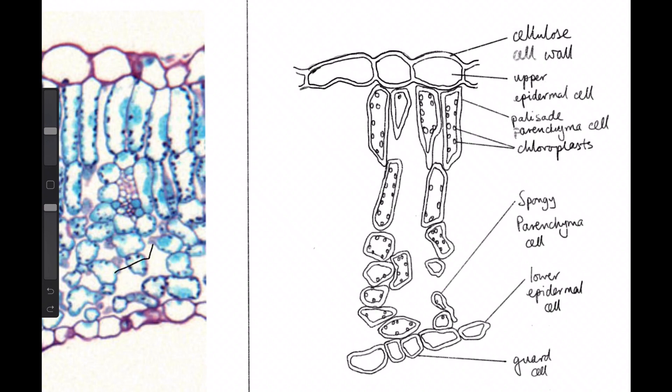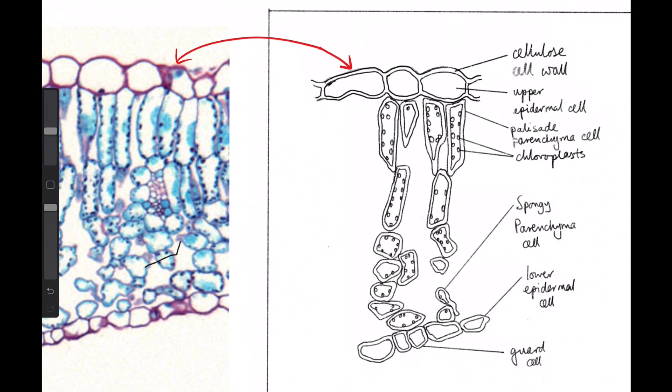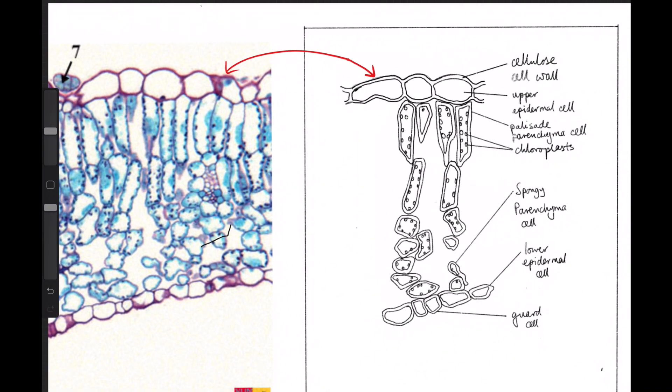visible structures we drew, so I could see the cellulose wall here. So I have represented that as such on the other side. Remember, we use the guidelines to make sure that the proportions of the drawing were maintained as far as we could maintain them.